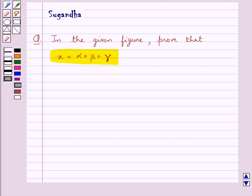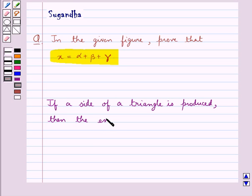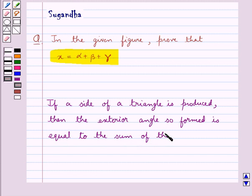Before we move on to the solution, let's recall the fact which says that if a side of a triangle is produced, then the exterior angle so formed is equal to the sum of the two interior opposite angles.